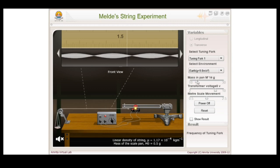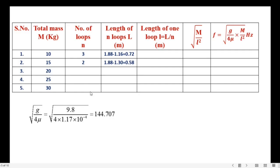Next let us change the mass to 15 grams, and the number of loops formed are 2. Align the pointer at the left and right nodes and note down the reading. Left node reading is 1.308 and the right side reading is 1.88. Enter the readings in the table: 1.88 minus 1.30 equals 0.58.